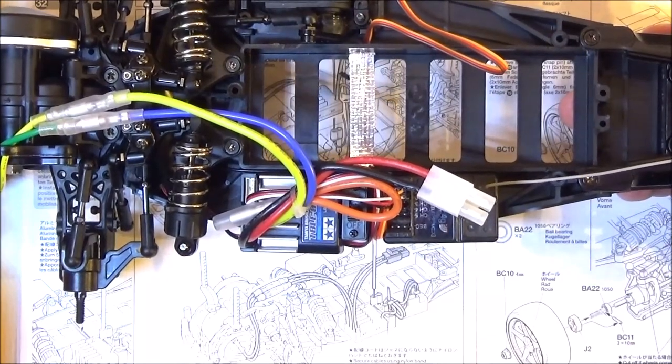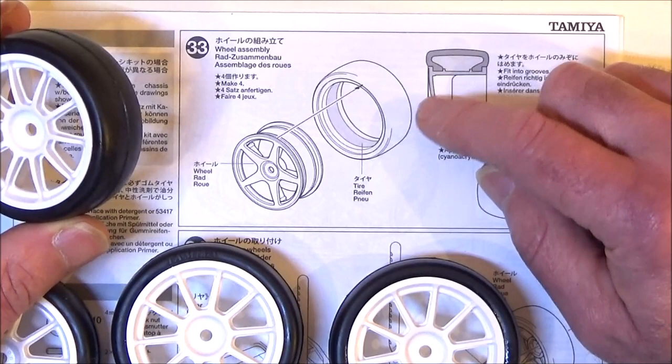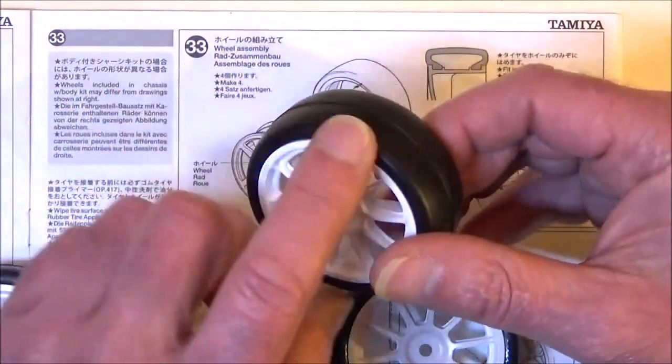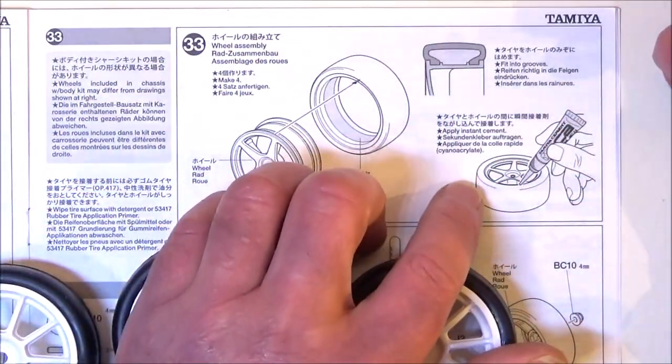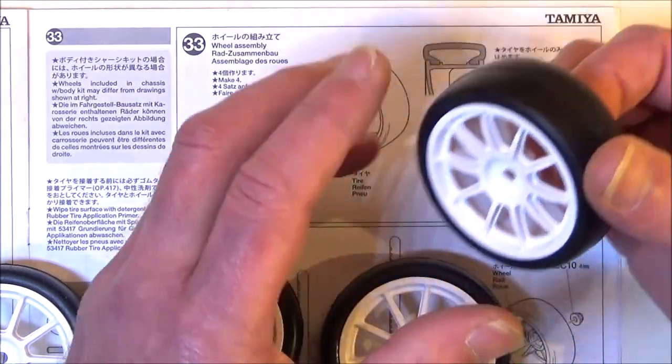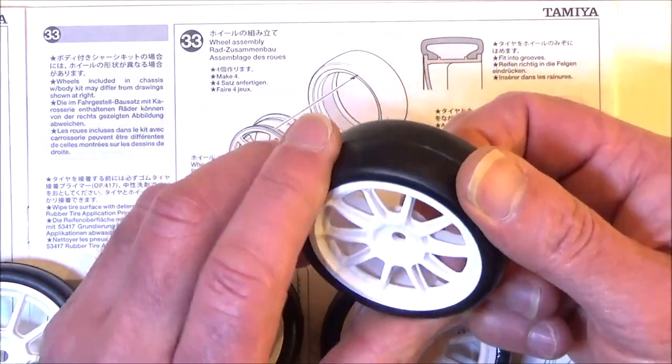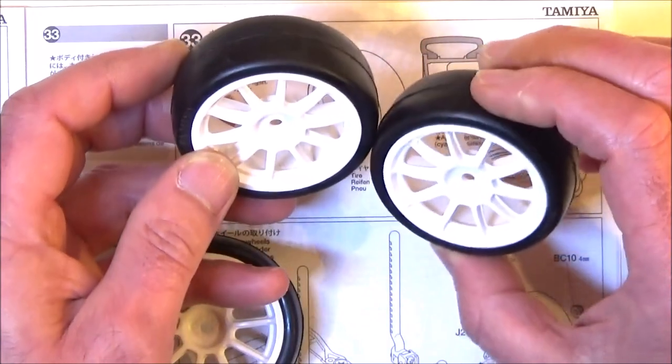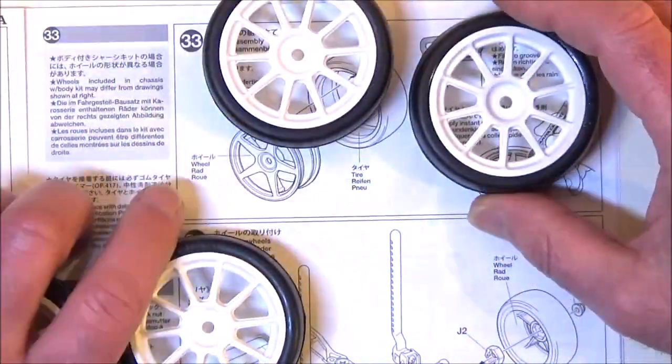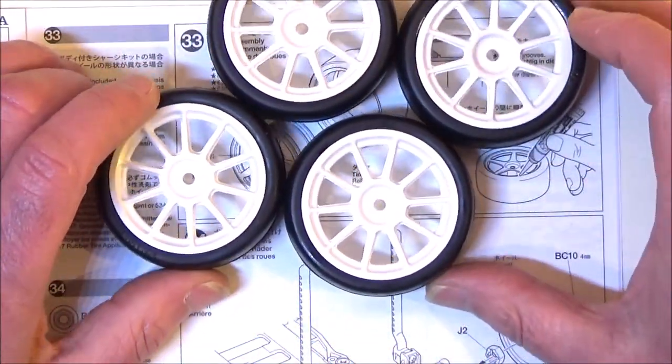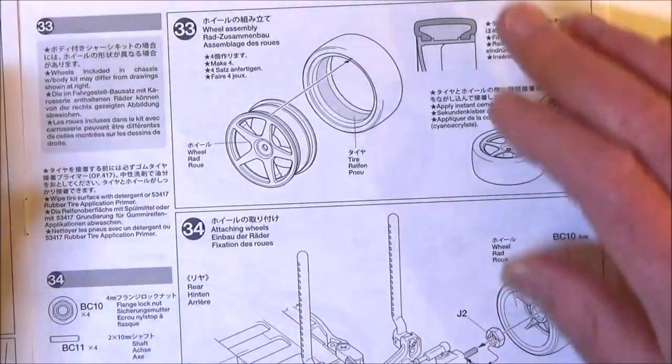Once you've done that, it's on to step 33. This step is simply putting the tires with the foams already inside onto the wheels. It does show you applying instant cement, so I've put my usual rubber type glue in there. Hopefully they'll hold okay, so put your four tires on, straight on to step 34.